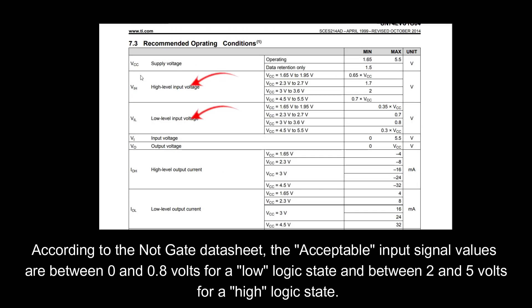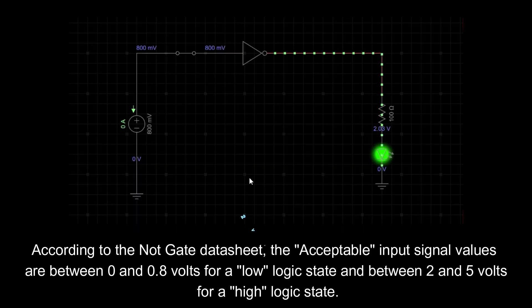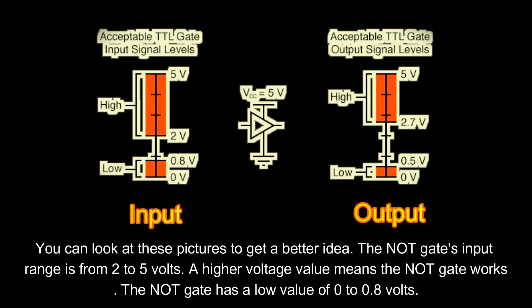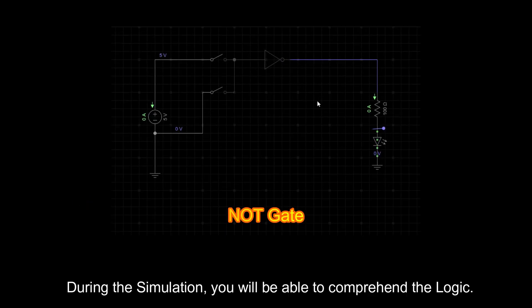According to the NOT gate data sheet, the acceptable input signal values are between 0 and 0.8 volts for a low logic state and between 2 and 5 volts for a high logic state. You can look at these pictures to get a better idea. The NOT gate's input range is from 2 to 5 volts. A higher voltage value means the NOT gate works. The NOT gate has a low value of 0 to 0.8 volts.